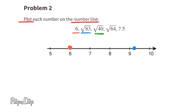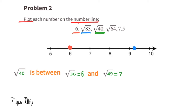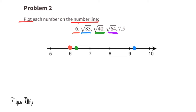The next number is the square root of 40. We know that 6 squared is 36 and 7 squared is 49, so we're going to plot this point between the 6 and the 7, a little bit closer to the 6 because 36 is closer to 40 than 49 is. The next number is the square root of 64. Since 8 squared is 64, we can plot this point right above the 8. Finally, 7.5 is 7 and a half, so we plot it exactly between 7 and 8.